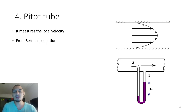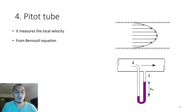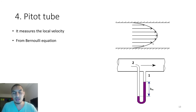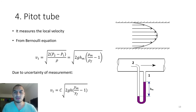Most velocity-measuring devices measure average velocity, but there is a velocity profile. According to the no-slip boundary condition, the velocity at the pipe walls is zero, and at the center of the pipe you have the maximum velocity. So if you move the Pitot tube to the center you get the maximum velocity; move it toward the wall and you get a lower velocity — that's how you measure local velocity.